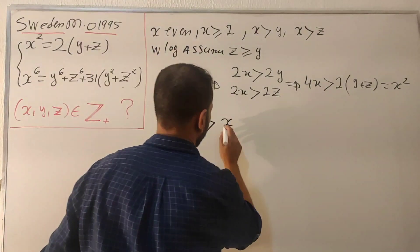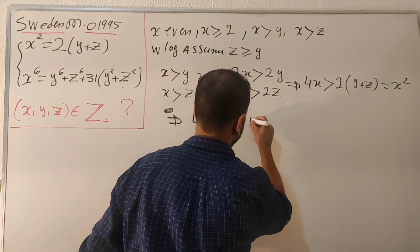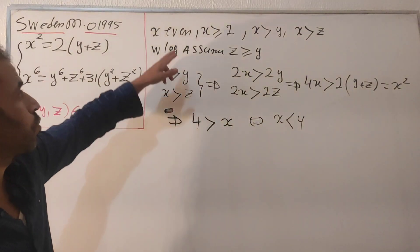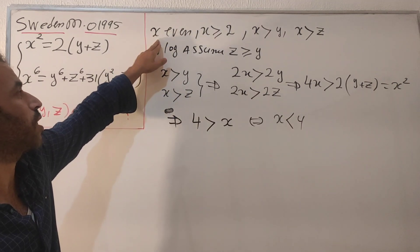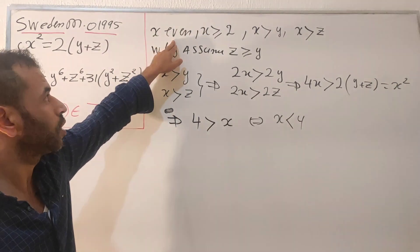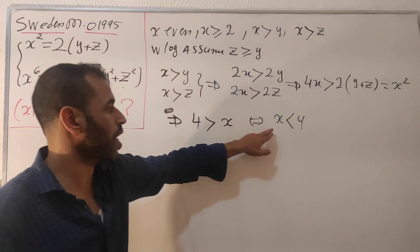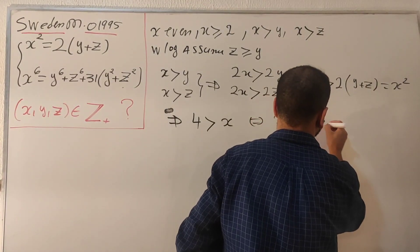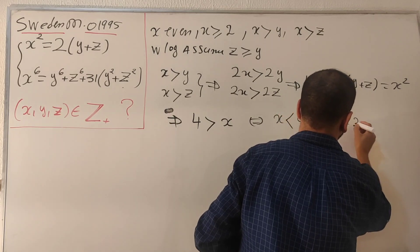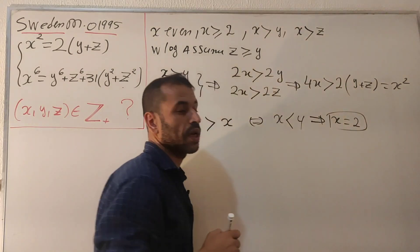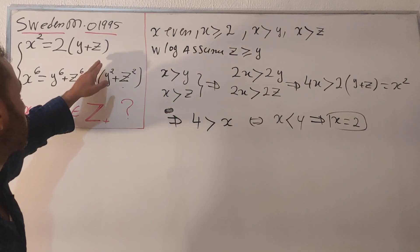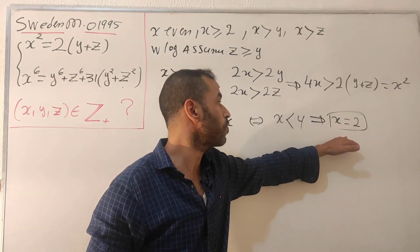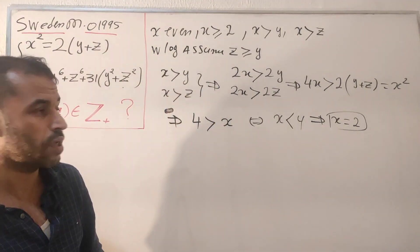Flipping the inequality, we get x is strictly less than 4. But we already established that x is even and x is greater than or equal to 2. So x cannot be 0 (we need positive integers), and x must equal 2.